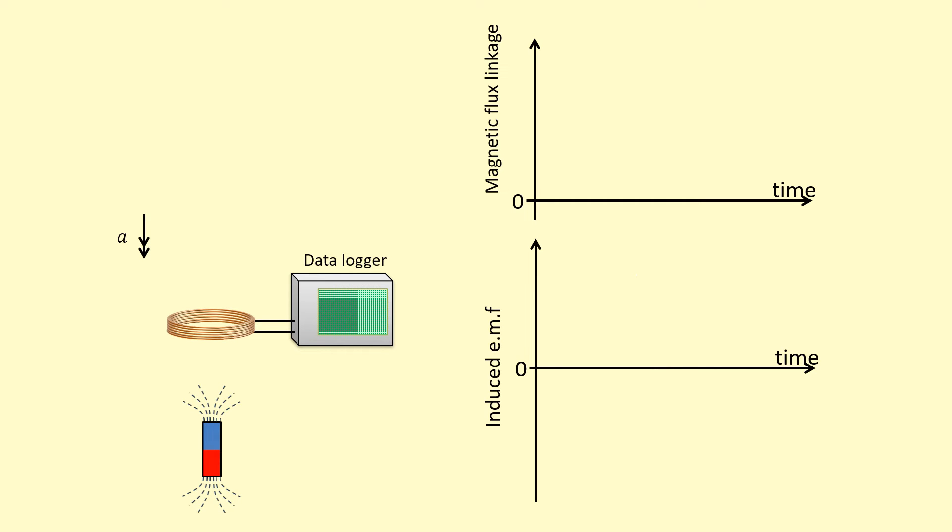So obviously, as the magnet approaches the coil, the magnetic flux increases, and then it peaks off, and then it decreases. But notice how the decrease in flux is quicker. That's because the magnet has been accelerating. So it enters at a lower speed,